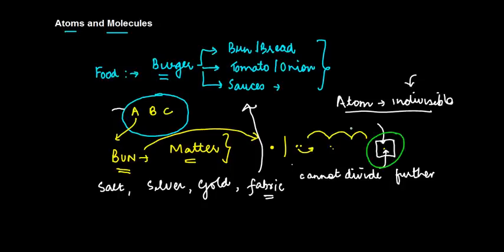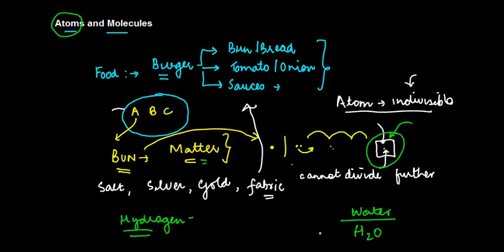The smallest particle is basically known as something called an atom or indivisible. Scientists discovered that these atoms of individual matter do not exist independently. For example, if I talk about the atoms of hydrogen, they may not exist independently.